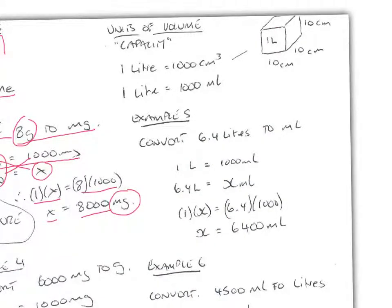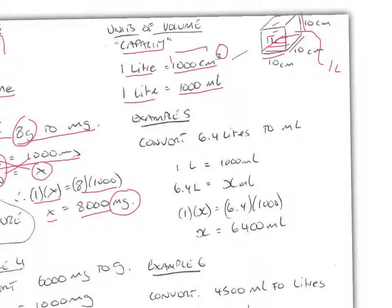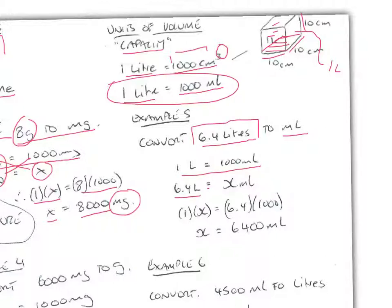Now we'll look at units of volume or capacity. 1 litre is the same as 1000 centimetres cubed — that's a 10 by 10 area of 100 centimetres squared, multiplied by 10, giving 1000 centimetres cubed, which is equivalent to 1 litre. Also, 1 litre equals 1000 millilitres. To convert 6.4 litres to millilitres: 1 litre equals 1000 millilitres, so 6.4 litres equals x millilitres. Cross-multiplying, x equals 6400 millilitres.